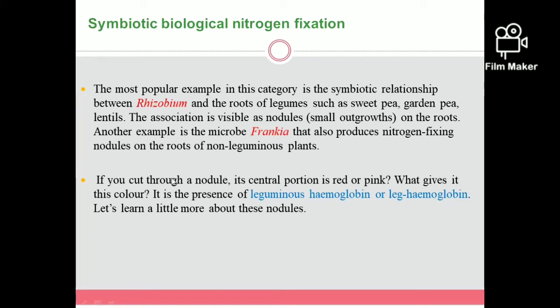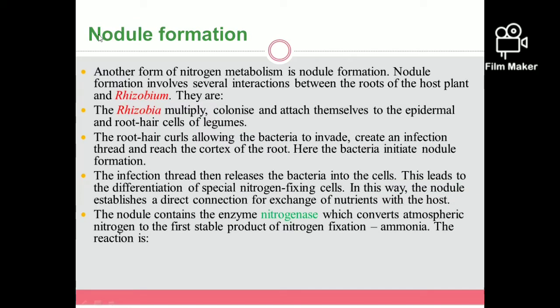When a nodule is cut at the central position, it shows a red or pink color because of the presence of a pigment called leguminous hemoglobin or leg hemoglobin. Let us study some more details about nodule formation, which is another important part of nitrogen metabolism in plants.